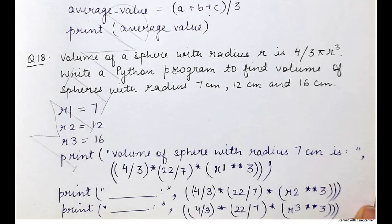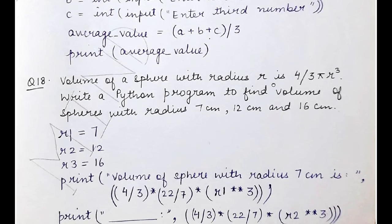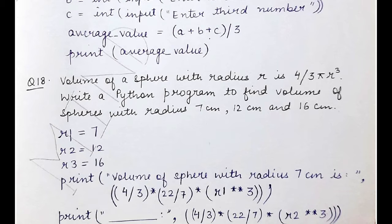Question 18: the volume of a sphere with radius r is (4/3) × π × r³. You have to write a Python program to find the volume of spheres with radius equal to 7 cm, 12 cm, and 16 cm. You can directly apply the formula and the program will give the required output. There are two approaches: either write a program with a single print statement that accepts the radius as input, or fix the three radius values directly in the program.